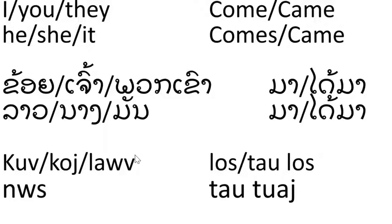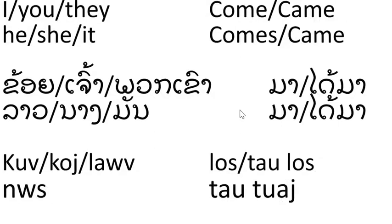In Hmong you said: khoi lo, koo lo, leu lo, niu tau lo, niu tau tua. Tau lo and tau tua mean the same thing, okay?